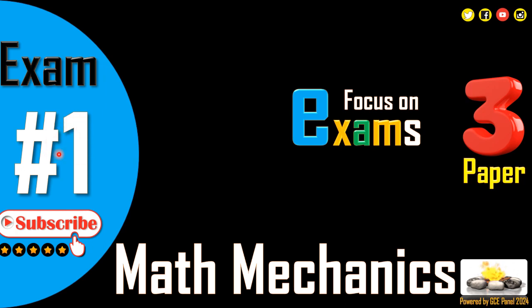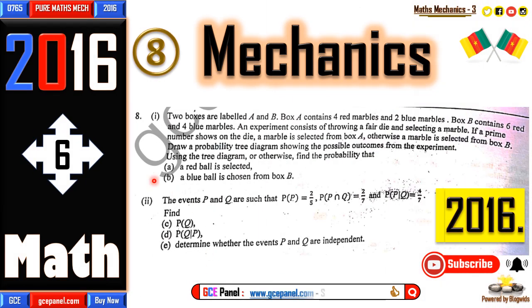This is the first question on probabilities. This paper is June 2016, question 8, and you can download it from the link below. The question reads: two boxes are labeled A and B. Box A contains four red marbles and two blue marbles. Box B contains six red marbles and four blue marbles.